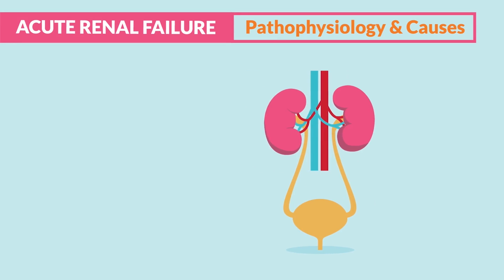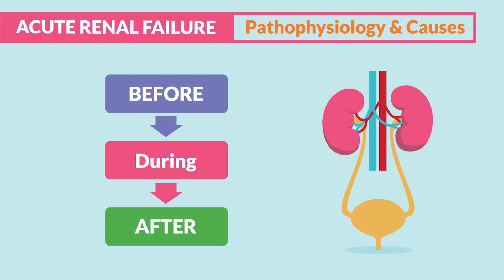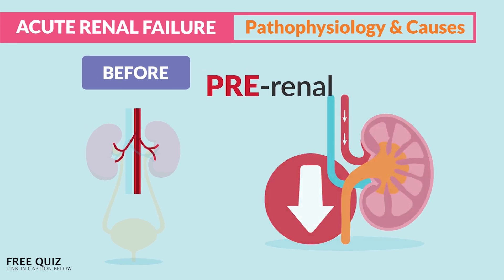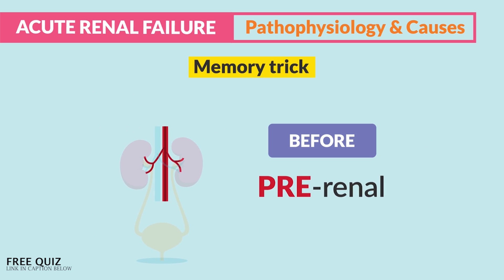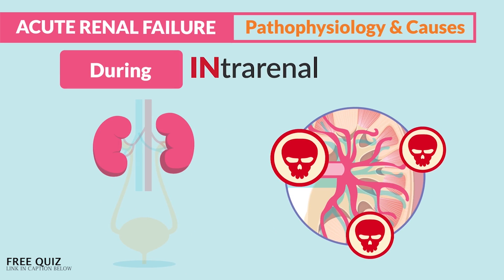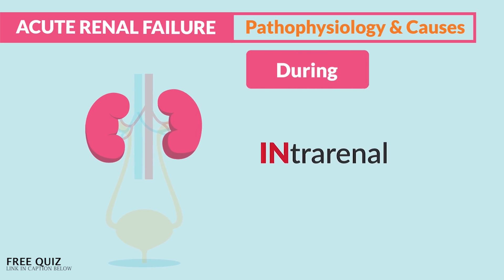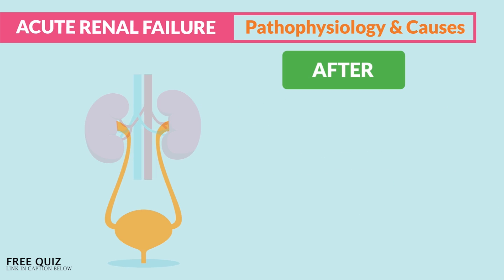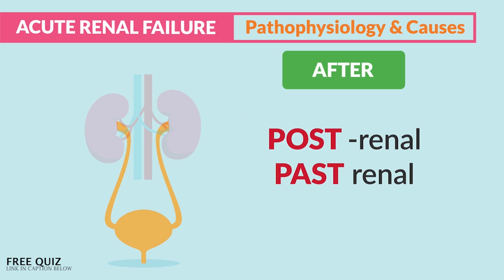In acute kidney failure, there are three types. Pre-renal is decreased blood flow to the kidney — think 'decreasing pre-fusion with pre-renal.' Intra-renal is damage inside the renal — think 'in the renal for intra-renal.' And if the cause is after the kidney, that's post-renal — just think 'post for past renal.'